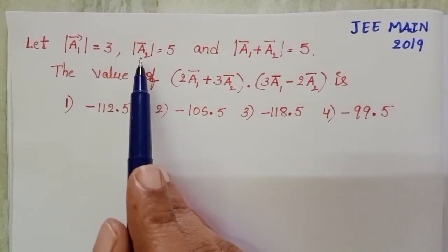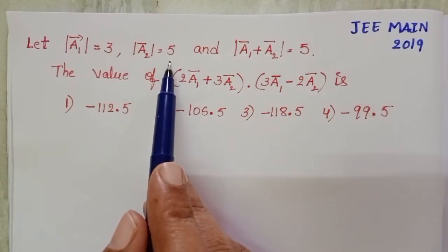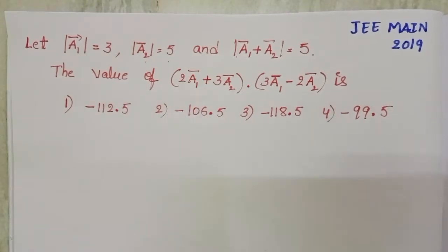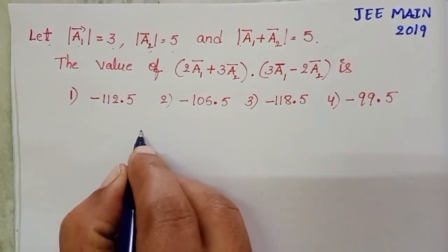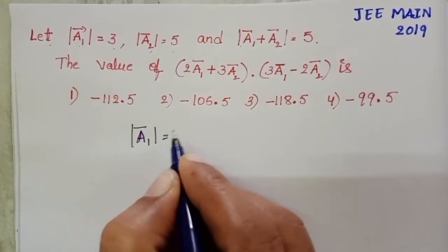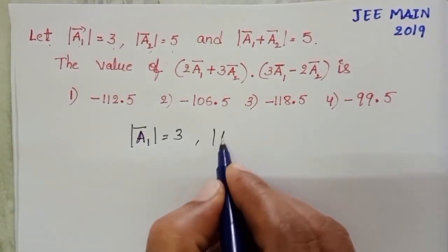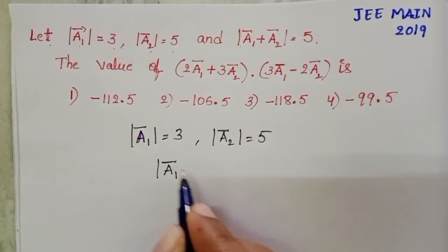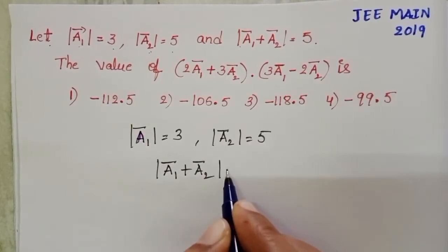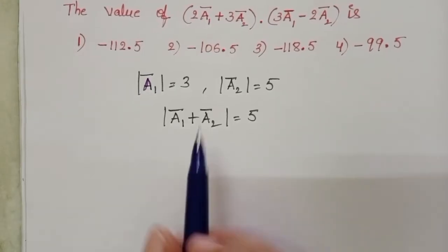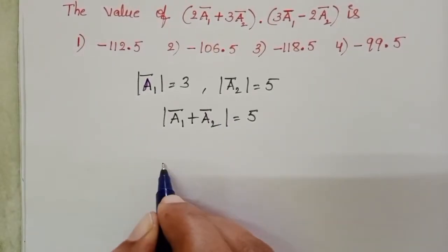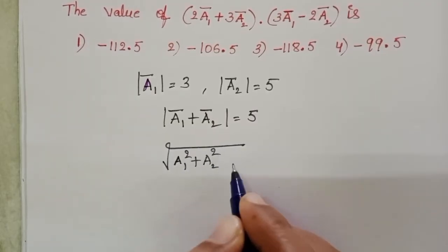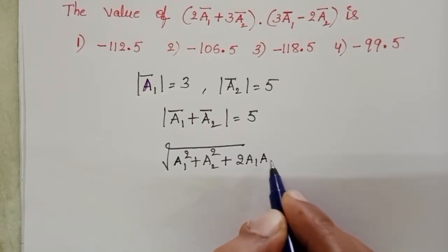Let the magnitude of a1 bar equal 3, magnitude of a2 bar equal 5, and magnitude of a1 bar plus a2 bar equal 5. The resultant formula gives: mod of a1 bar plus a2 bar equals square root of a1 squared plus a2 squared plus 2 times a1 times a2 times cos theta.